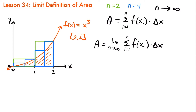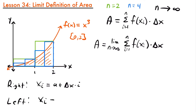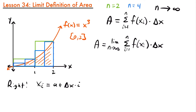For right endpoints, x sub i equals a plus delta x times i. For left endpoints, x sub i equals a plus delta x times (i minus 1). Using right endpoints is simpler — just a plus delta x times i — whereas left endpoints require a plus delta x times the quantity (i minus 1), making calculations more complicated. Since we'd get the same answer either way, we're going to use right endpoints when finding the area using the limit definition.